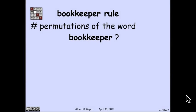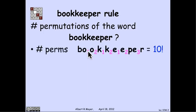So the bookkeeper rule is about the question of, look at the word bookkeeper and ask, how many different ways are there to scramble the letters in this word that actually are distinguishable? The point being that the two o's are indistinguishable, so the order in which they appear doesn't matter, likewise the three e's and the two k's. How do we answer this question?